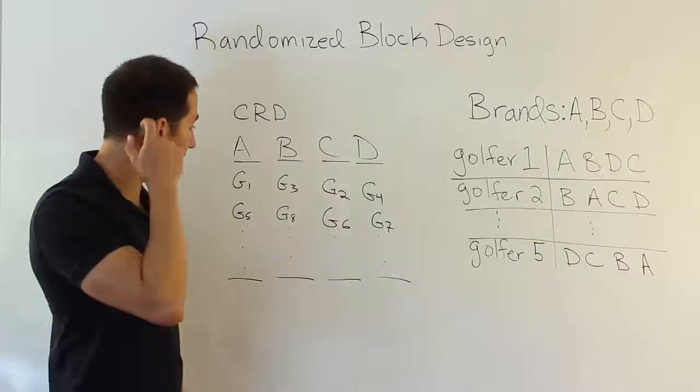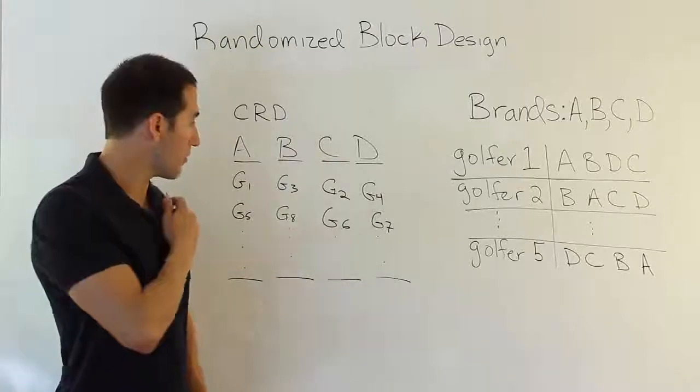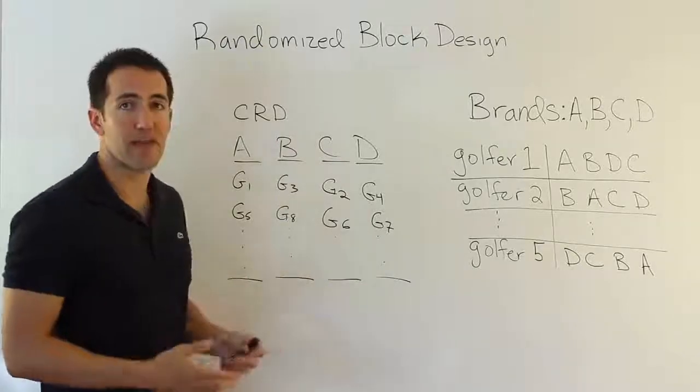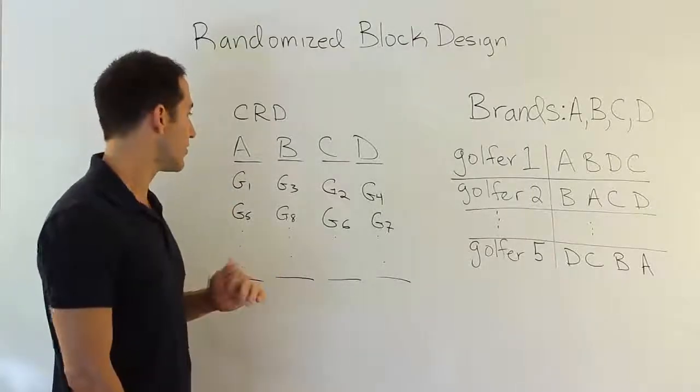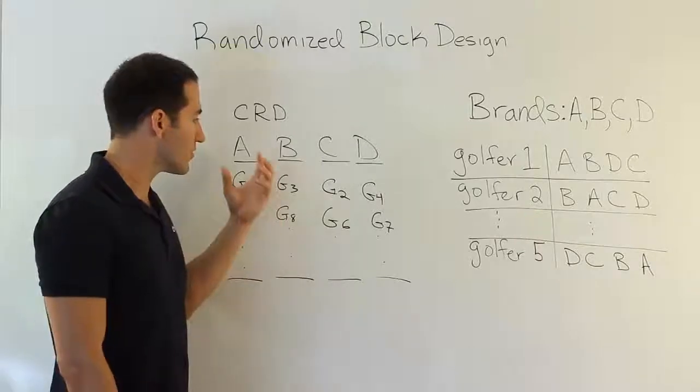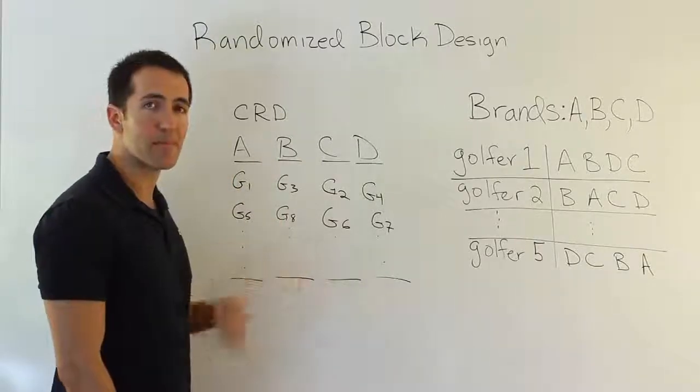You may say that can happen lots of times in a completely randomized design experiment. We hope that the randomization here prevents that. We hope that we don't have all the bad golfers in one column. You can make that argument, but if there's a way to strip away the golfers' differences, wouldn't that be a better approach? I think it would be.